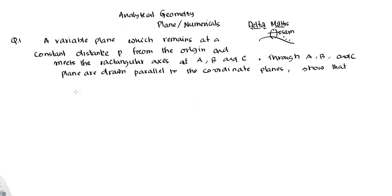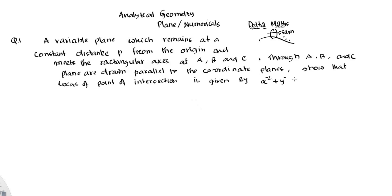Show that the locus of the point of intersection is given by x to the power minus 2 plus y to the power minus 2 plus z to the power minus 2 equal to P to the power minus 2. So question 2 summary: a variable plane which remains at a constant distance P from the origin and meets the rectangular axis — code, meet.